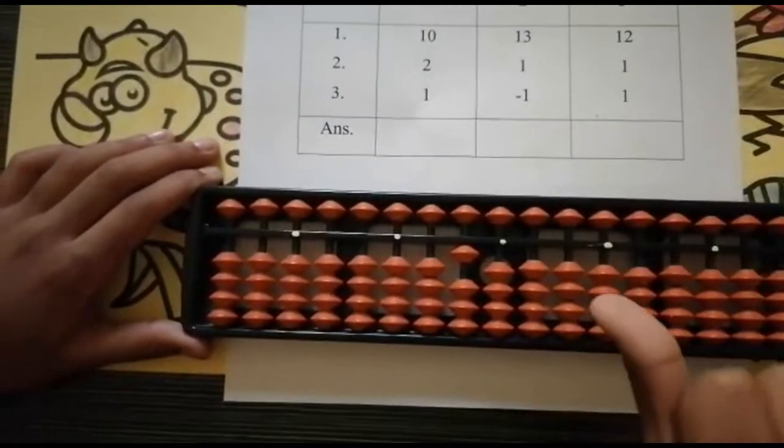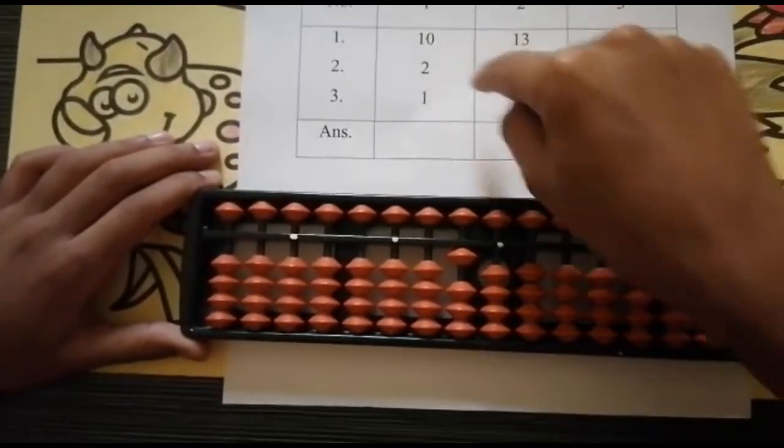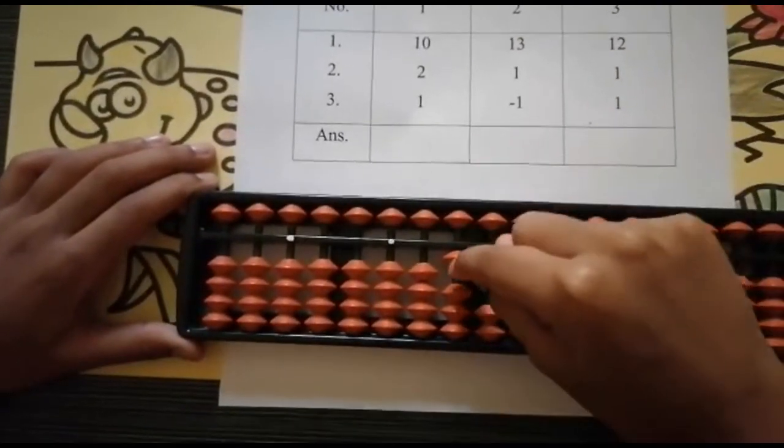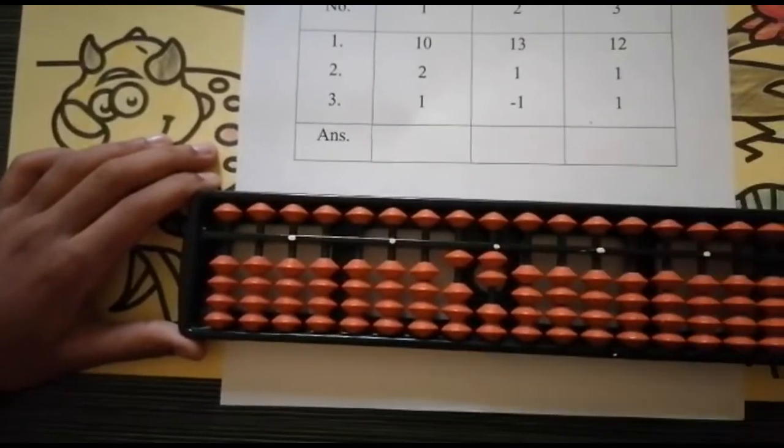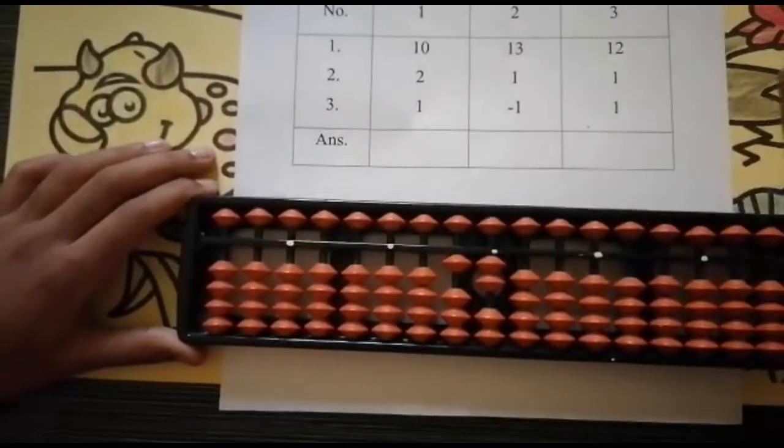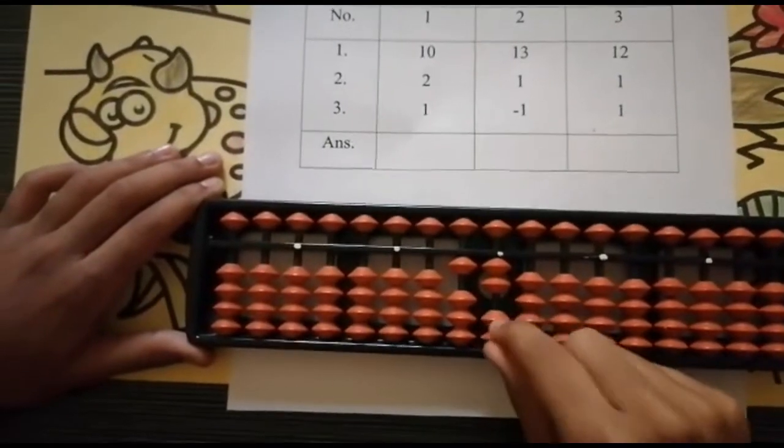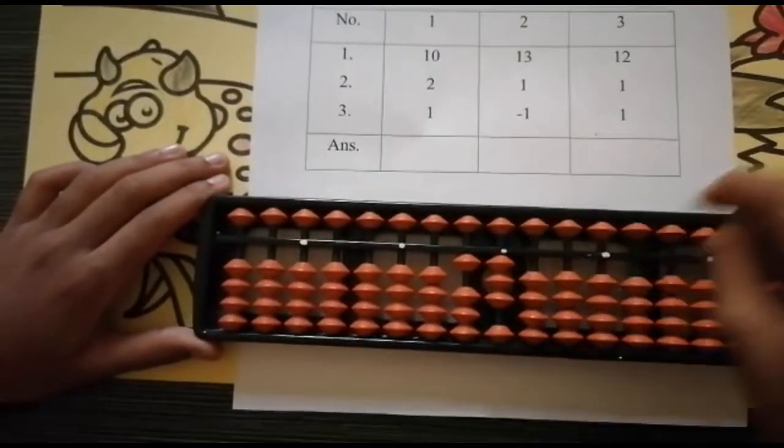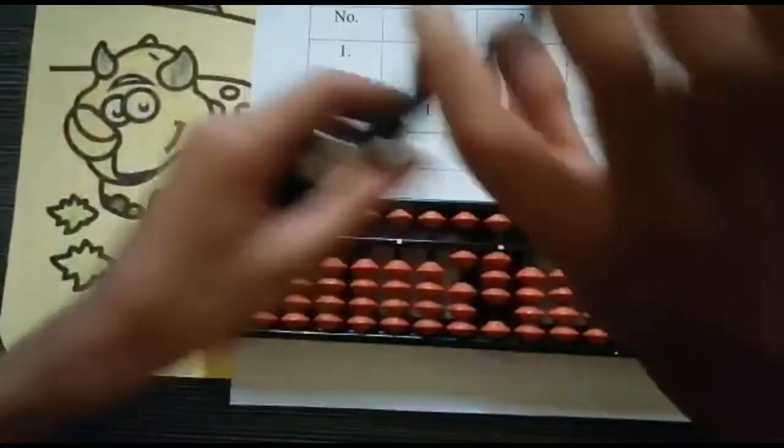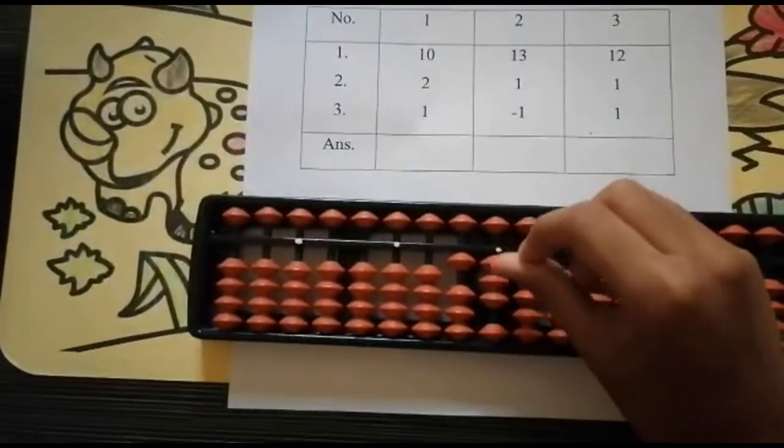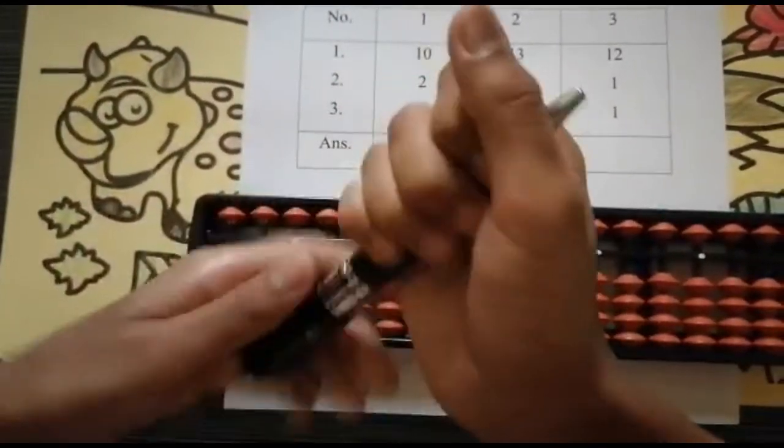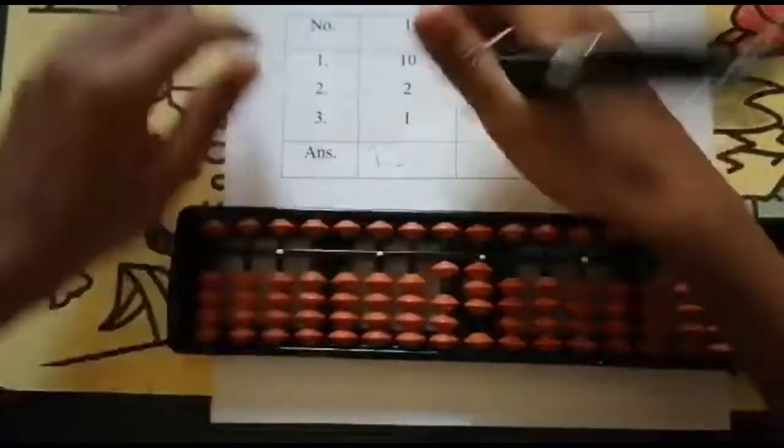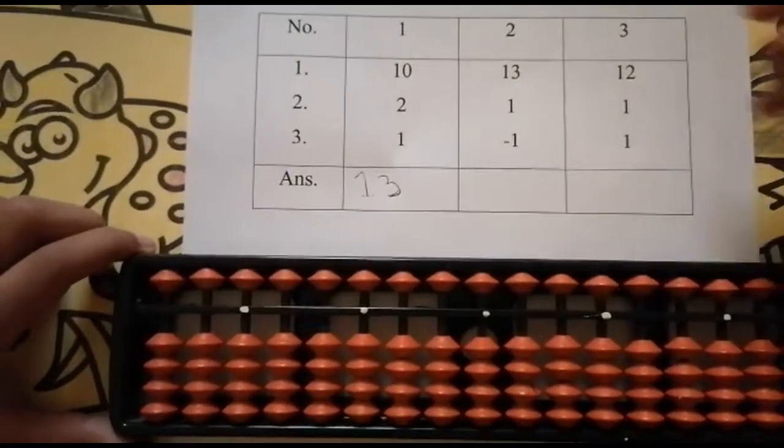Now we have to add 2 in the ones place. So 1, 2, keeping the finger, got 12. 10, 11, 12. And then the last digit is 1. Can you add 1? Yes, there are 2 beads balanced, so add 1. Keeping the finger, got 13. So the answer is 13.